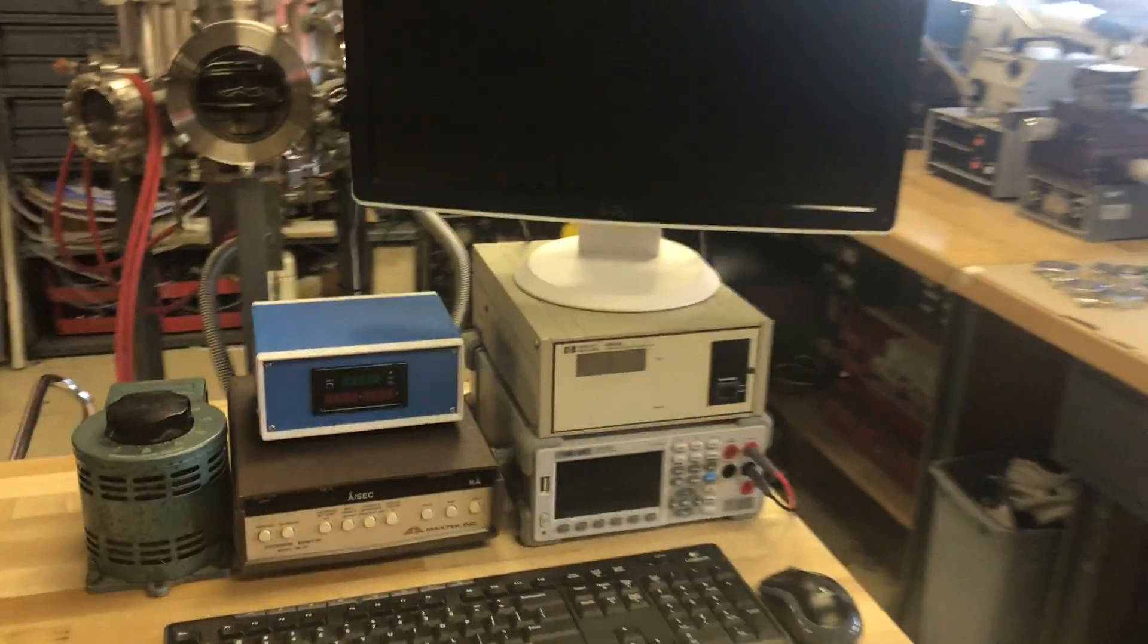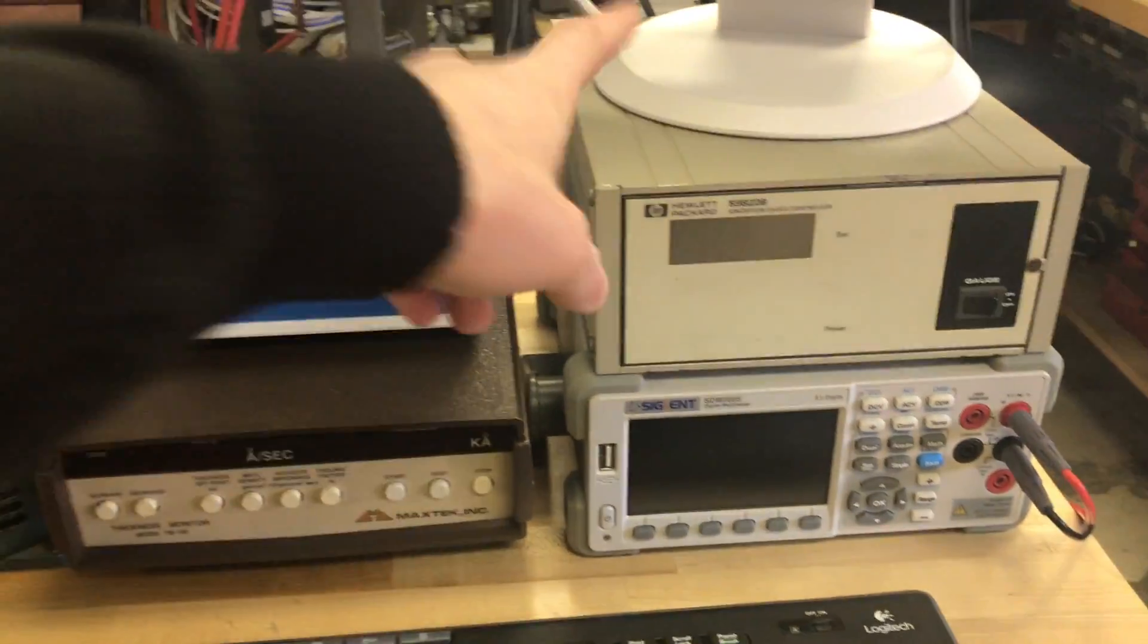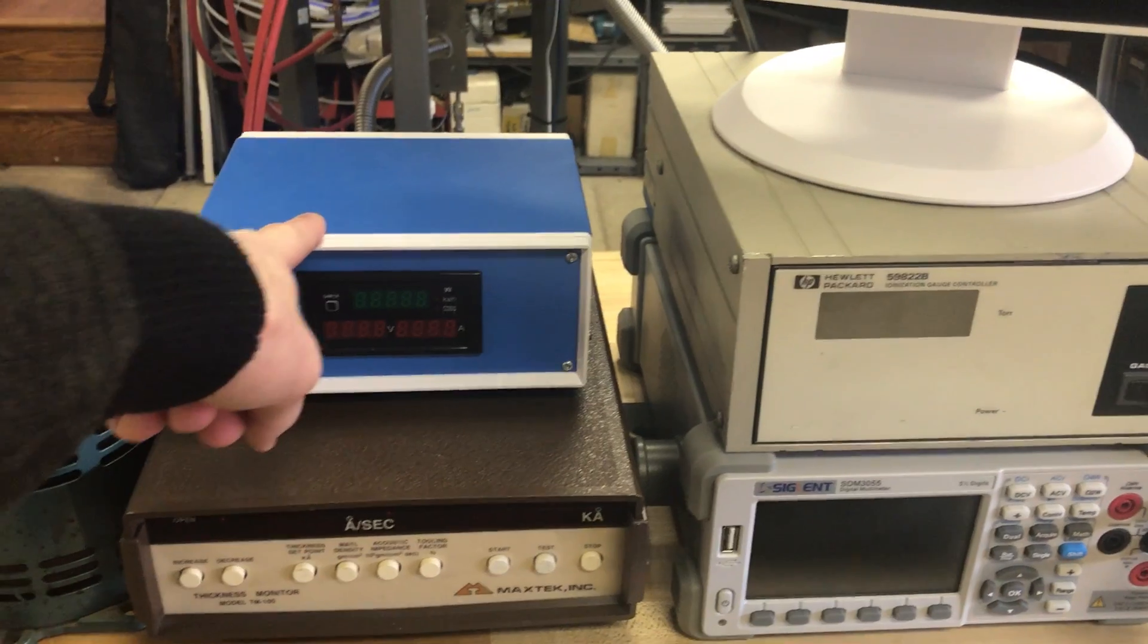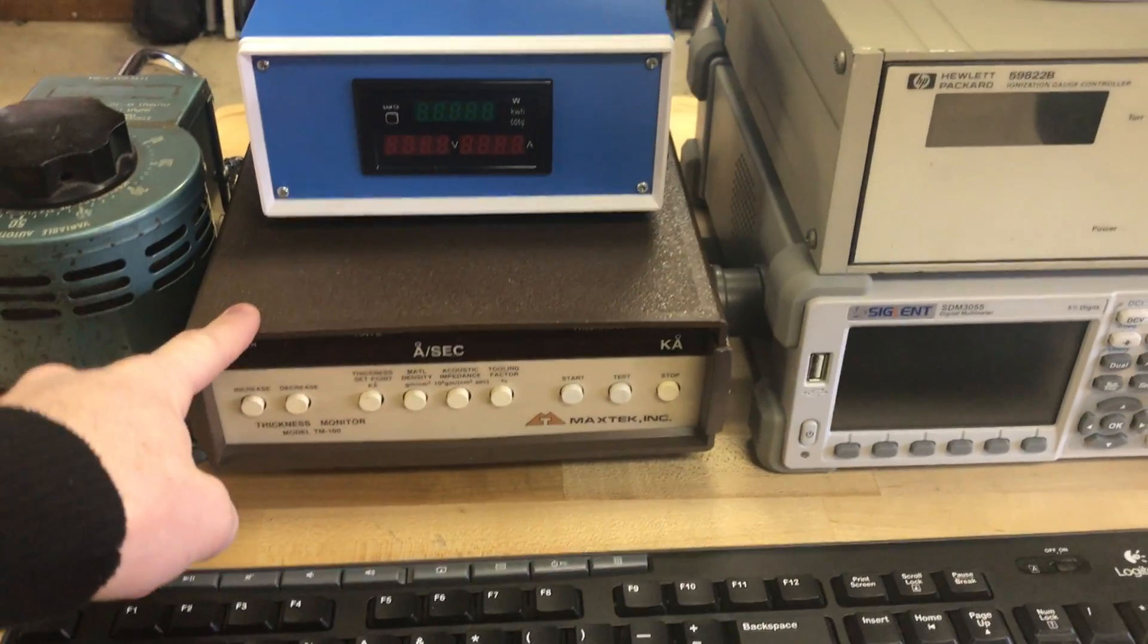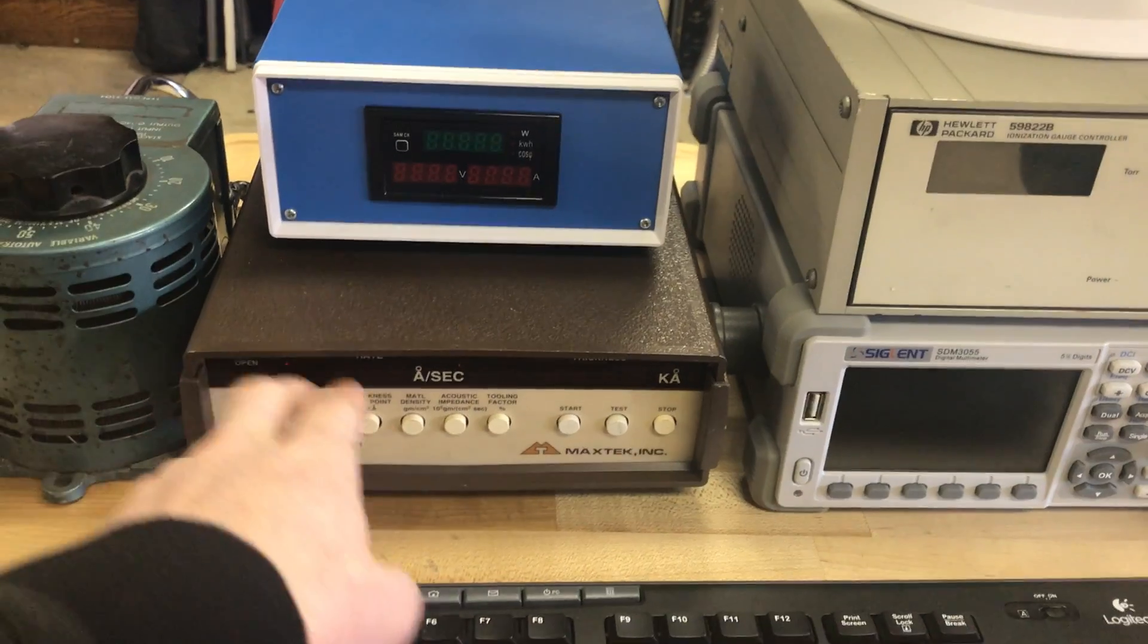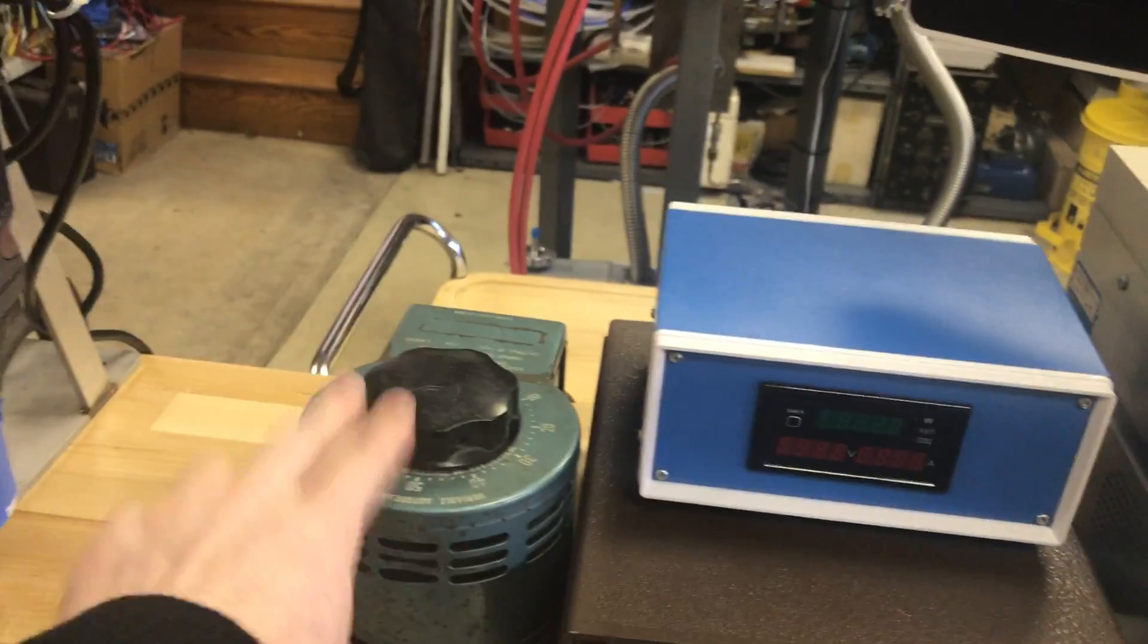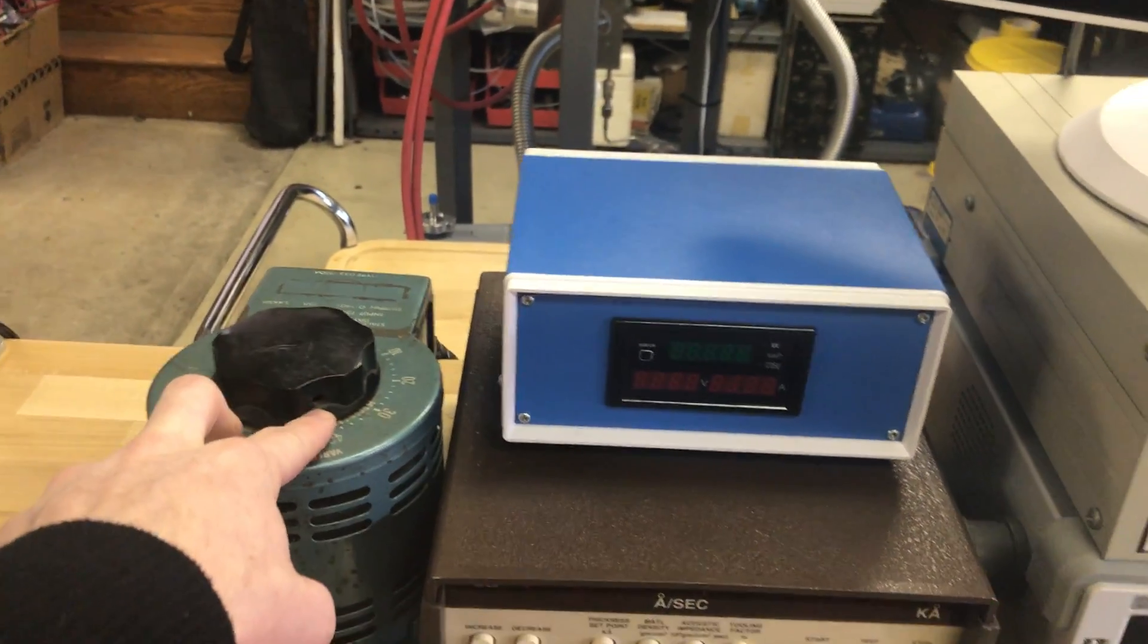Over here. Hot cathode ionization gauge controller. Watt meter. Resonant quartz thickness meter so I can get in live time as I'm making films the thickness and rate of those films. And I have a Variac to control the thermal evaporation boat.